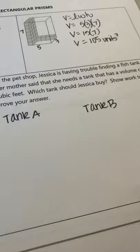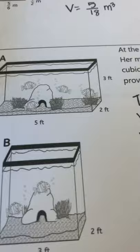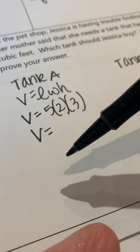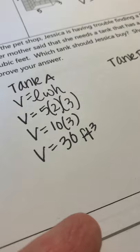Do one at a time. Let's find the volume of the first tank. And I can see that it has dimensions of 5, 2, and 3. So I would put in those dimensions. Notice that my work is going vertically. 5 times 2 is 10. And 10 times 3 is 30. So tank A has a volume of 30 cubic feet.